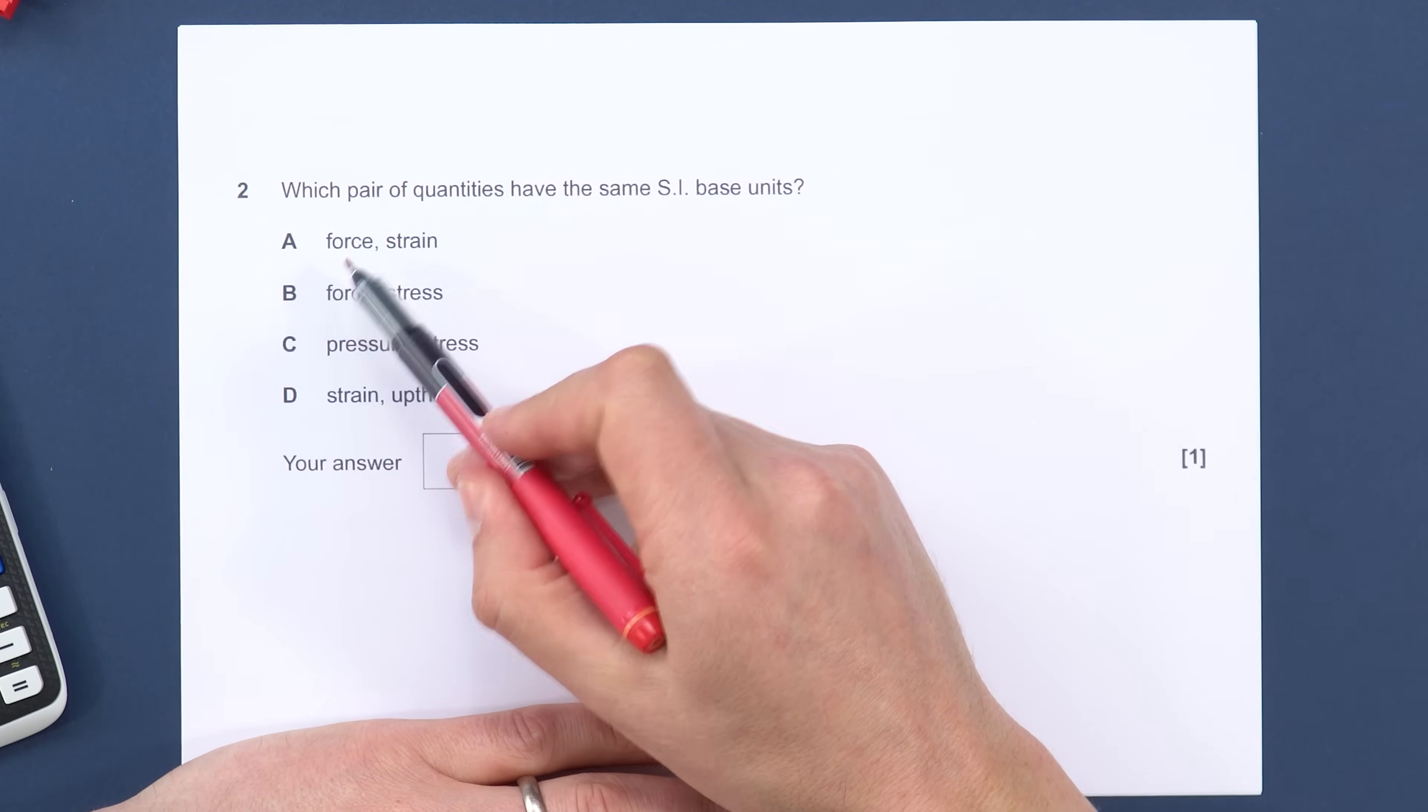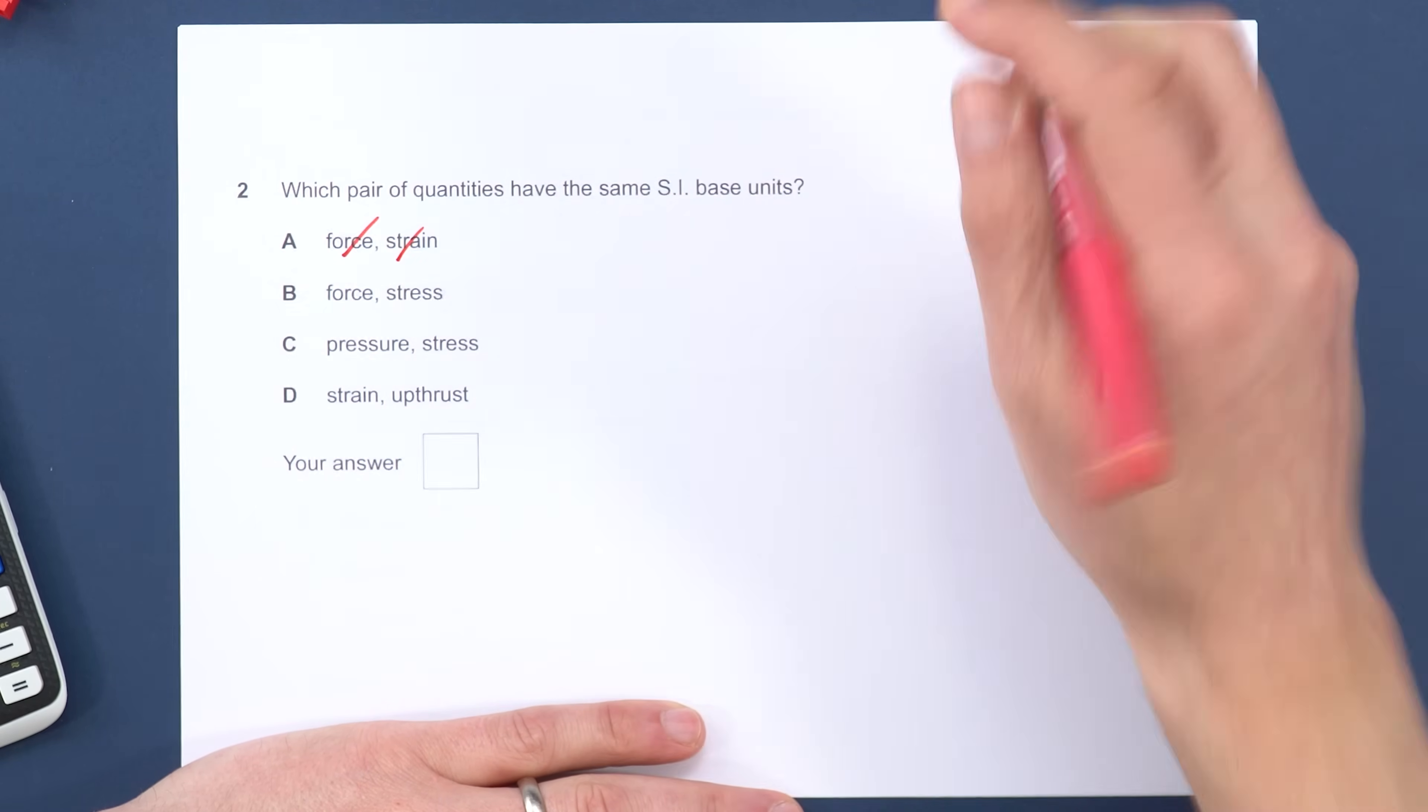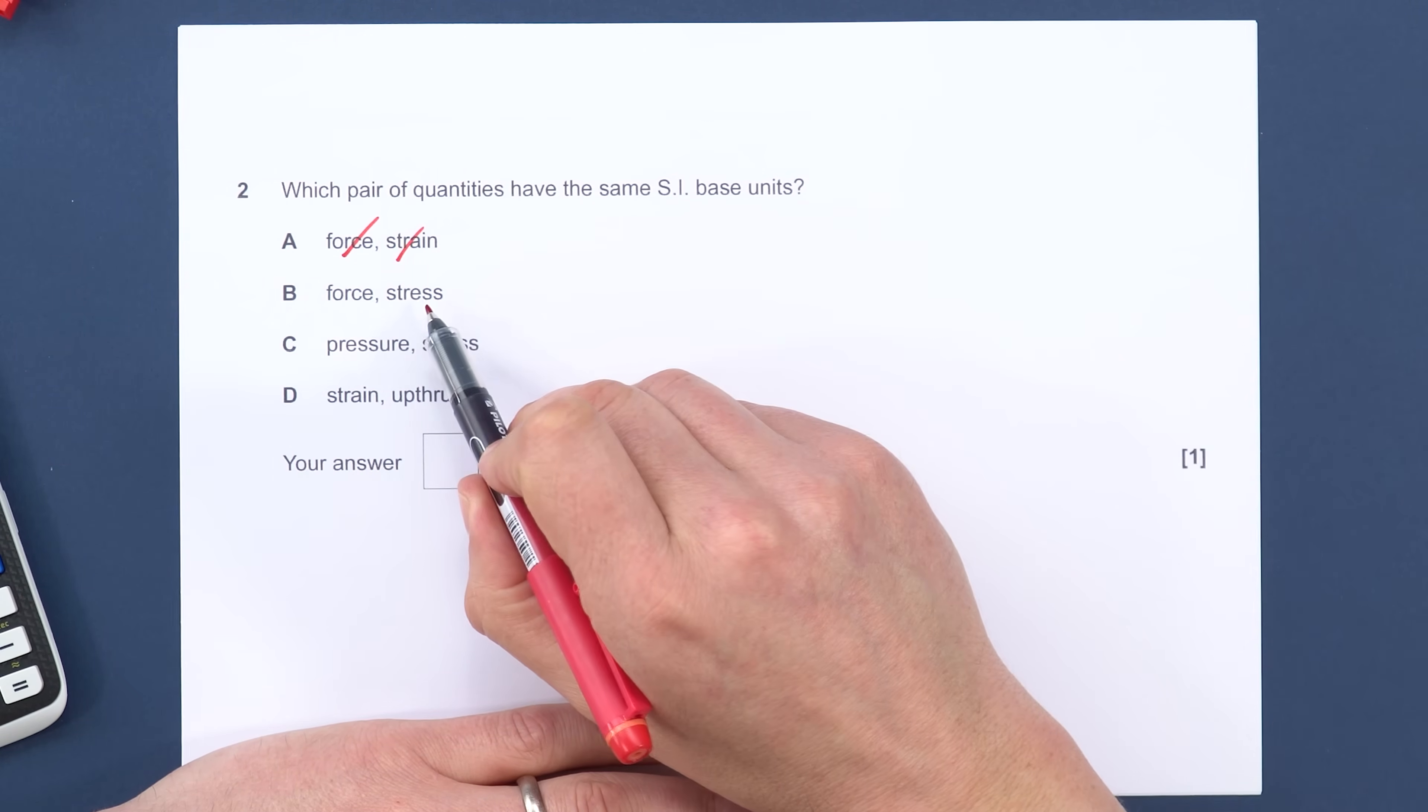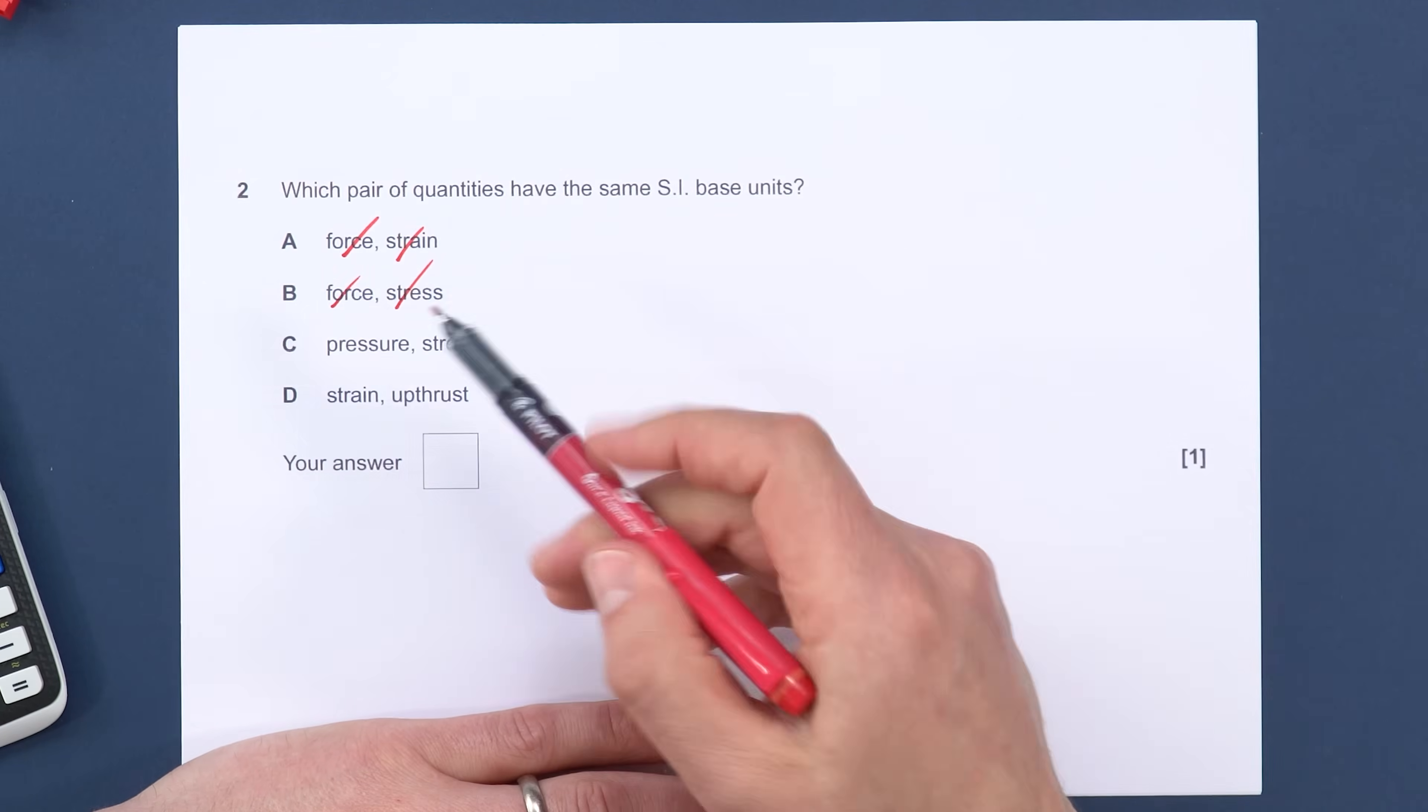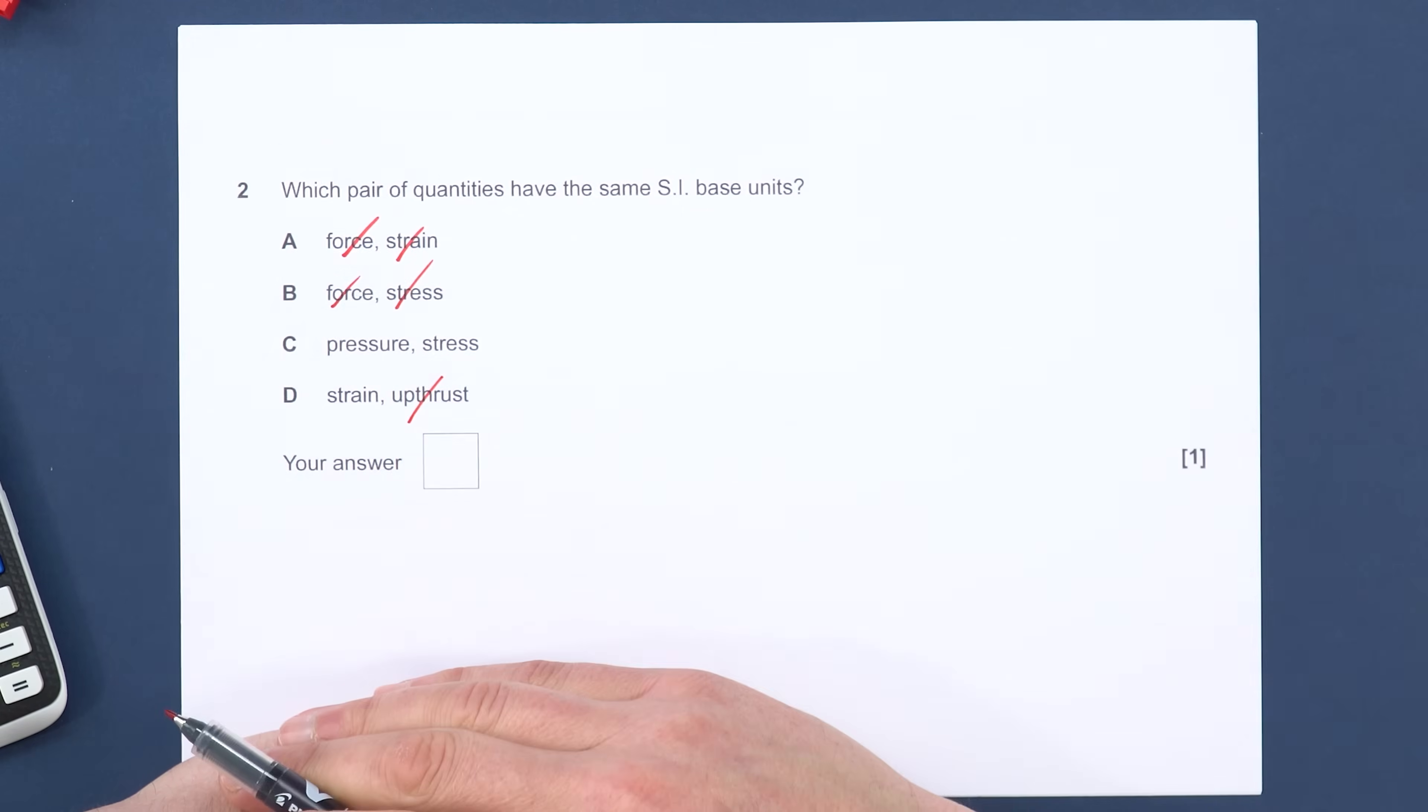The same SI base units. Well, force is measured in newtons and strain is dimensionless, so I don't even need to think about the base units in this one. I just need to think about what's definitely incorrect. Force and stress, well, stress is force over area, so it can't be those. Strain and upthrust, well, strain has no units and upthrust is a force, so it's measured in newtons. So just by working through these one by one and getting rid of the things I know are definitely wrong, I'm much more likely to get to the right answer.